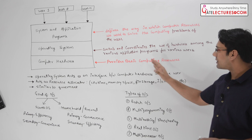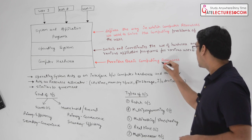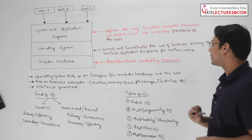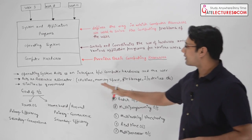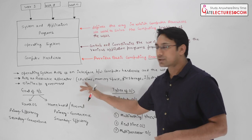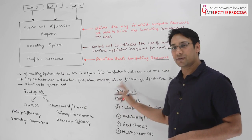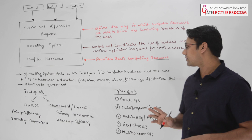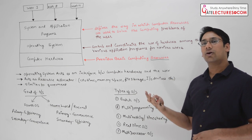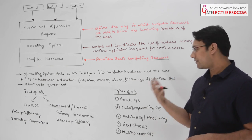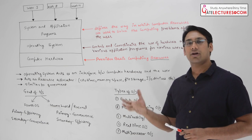What are these basic computer resources? We have a word called resources. There can be multiple types of resources: we can have CPU time as a resource, memory space as an important resource, file storage, I/O devices — all of these are resources. Even printers are also resources.